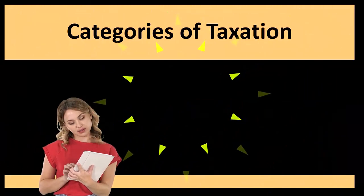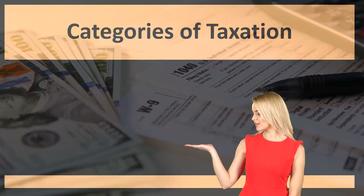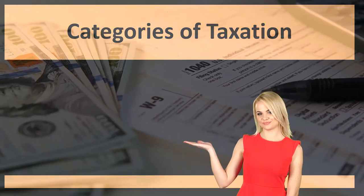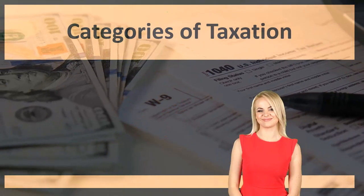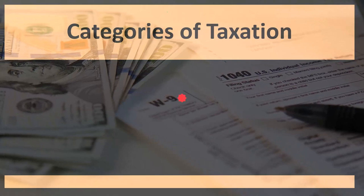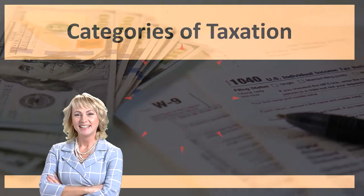Now, in the United States, we have the federal income tax system that blankets the whole country, and then we have the states which have the sovereignty to choose their own tax systems. Many states mirror the federal income tax system.